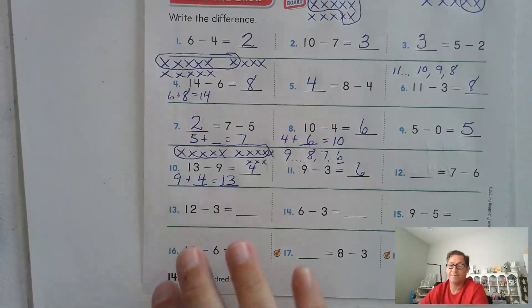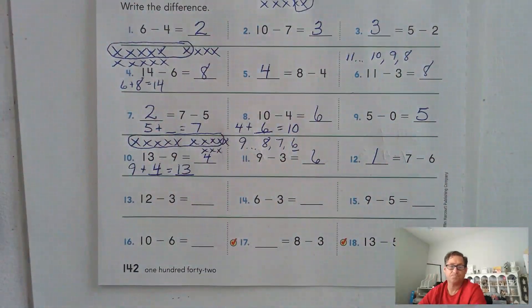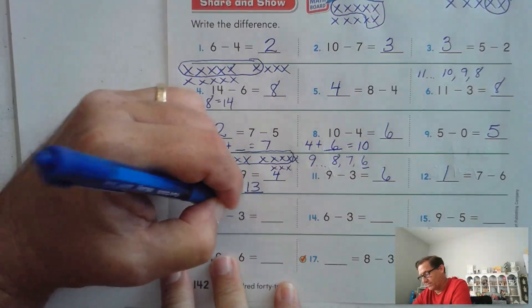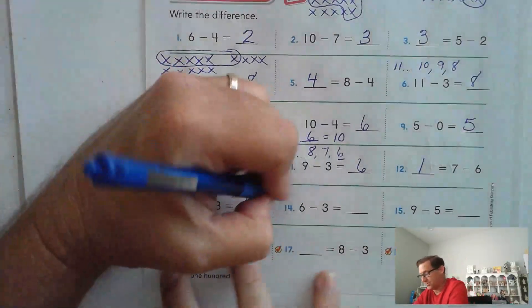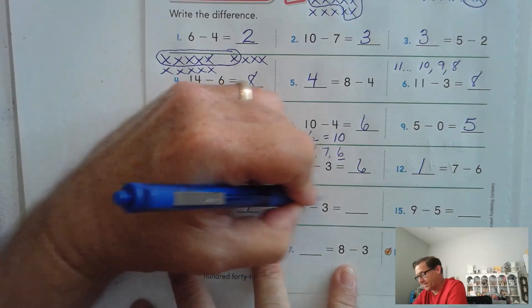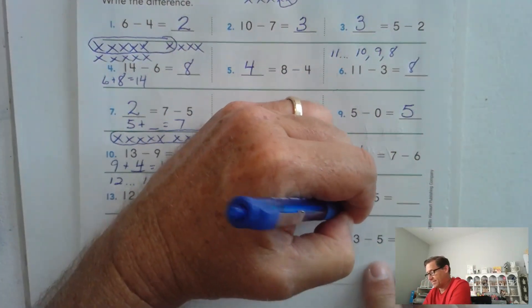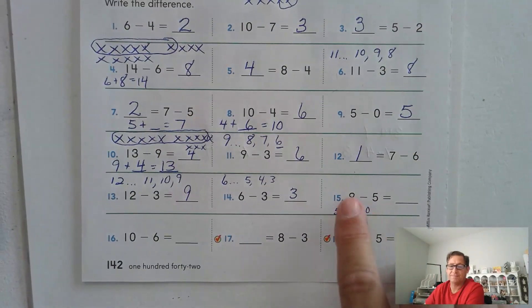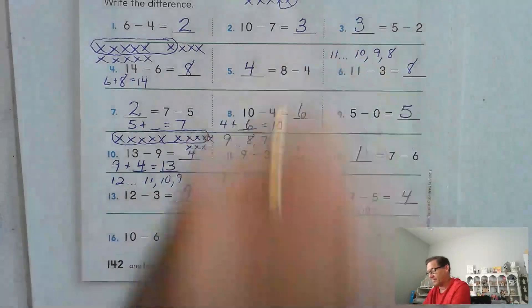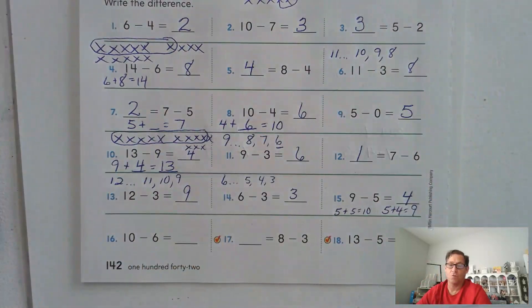So 9 minus 3 is 6. 7 minus 6. Well, 7 is just one more than 6, so 1. 12 minus 3: 12, 11, 10, 9. 6 minus 3: 6, 5, 4, 3. 9 minus 5. I know 5 plus 5 is 10, right? So 9 minus 5 is not the same as 10 minus 5. So 9 minus 5 is 4. If 5 plus 5 is 10, then 5 plus 4 is 9.